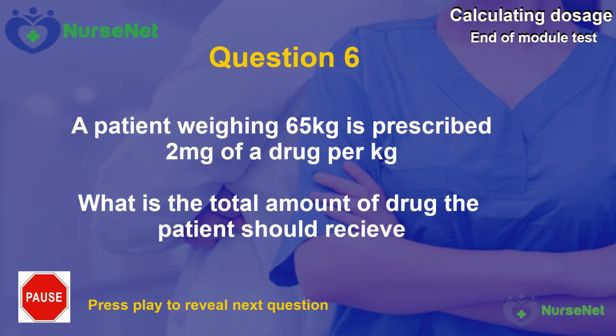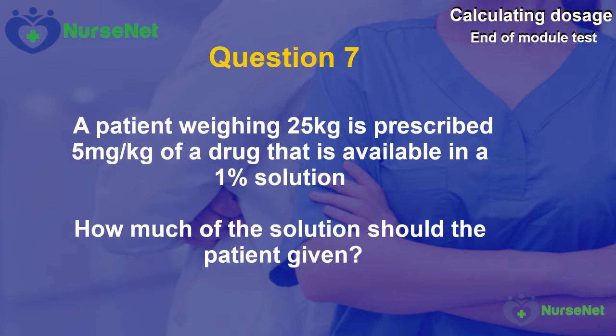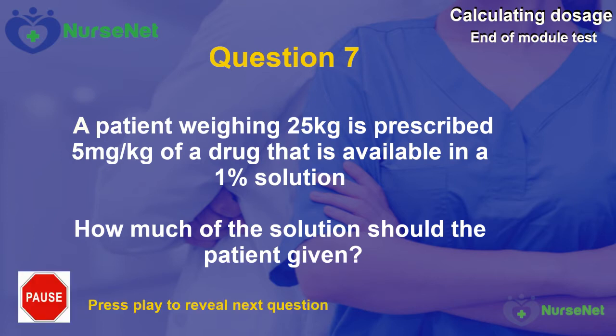Question 7. A patient weighing 25kg is prescribed 5mg per kilogram of a drug that is available in a 1% solution. How much of the solution should the patient be given?